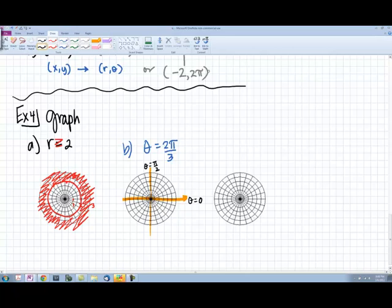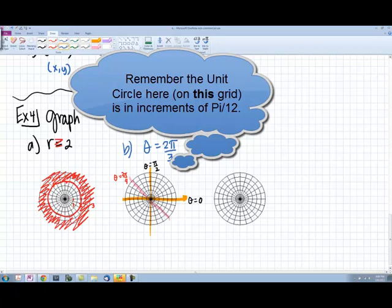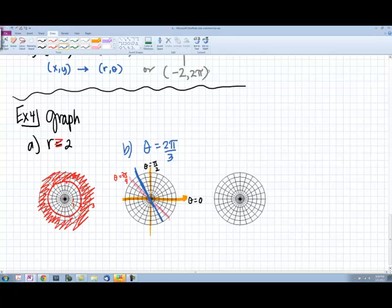The angle 2 pi over 3 should be in quadrant 2, with this one being 3 pi over 4. If I want 2 pi over 3, that would be this right here. And know that it's going to extend back into the other side, because a line goes on forever both directions.